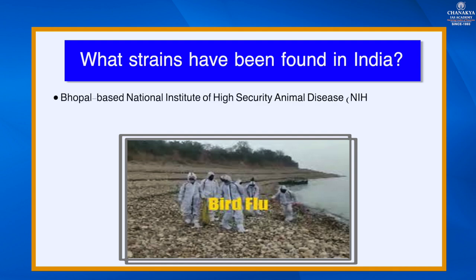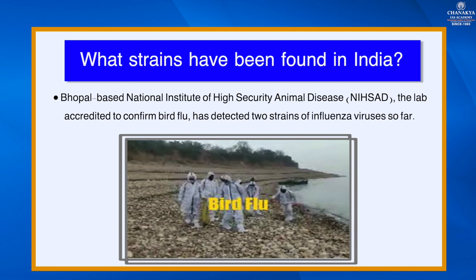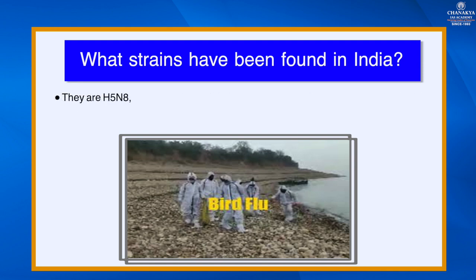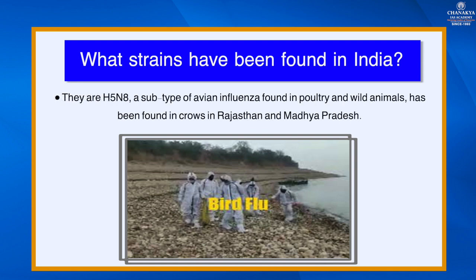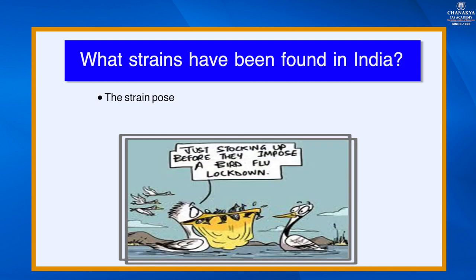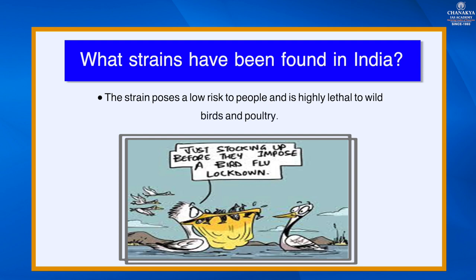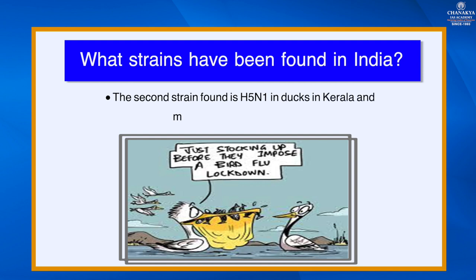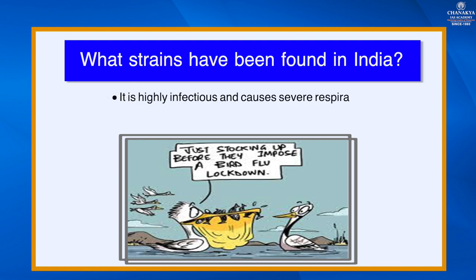The Bhopal-based National Institute of High Security Animal Disease lab has detected two strains of influenza virus in India. The first is H5N8, a subtype of avian influenza found in crows in Rajasthan and Madhya Pradesh — this strain poses a low risk to people but is highly lethal to wild birds and poultry. The second strain, H5N1, has been found in ducks in Kerala and migratory birds in Himachal Pradesh; it is highly infectious and causes severe respiratory disease in birds. Human cases of H5N1 are rare, but the mortality rate is about 60 percent.